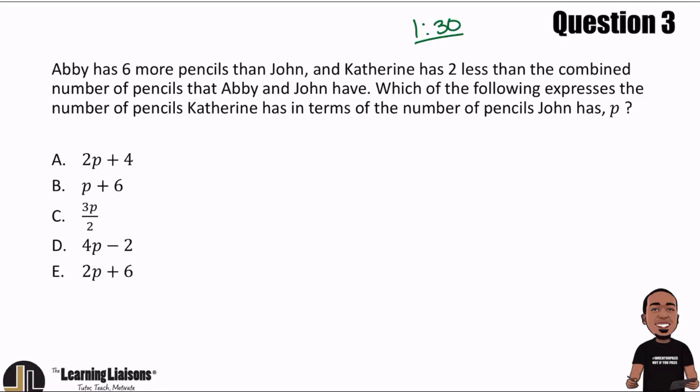So one more time: Abby has six more pencils than John, and Catherine has two less than the combined number of pencils that Abby and John have. Which of the following expresses the number of pencils Catherine has in terms of the number of pencils John has, p? All right, so here we go — hopefully you paused by now.